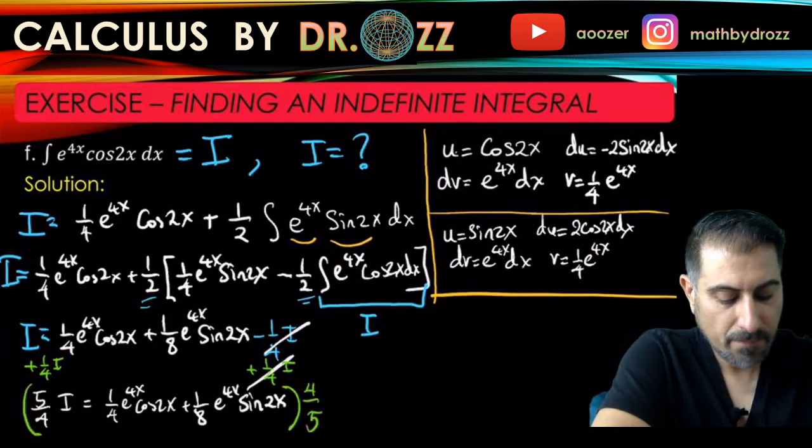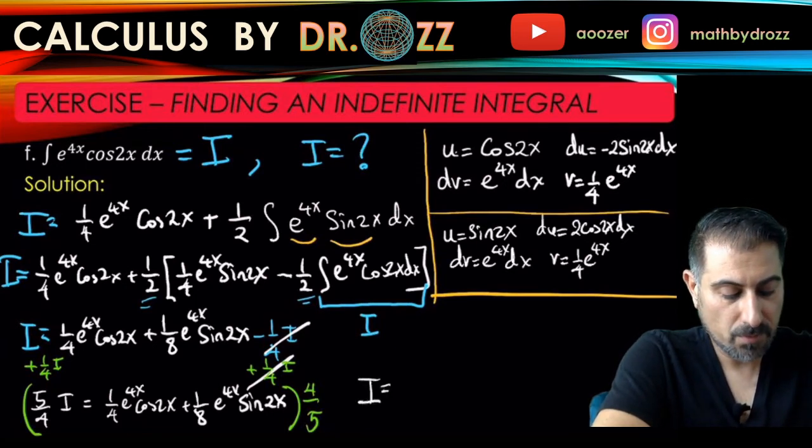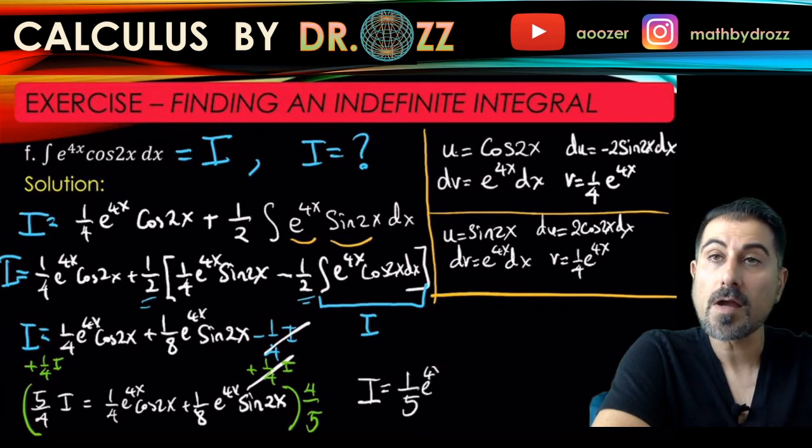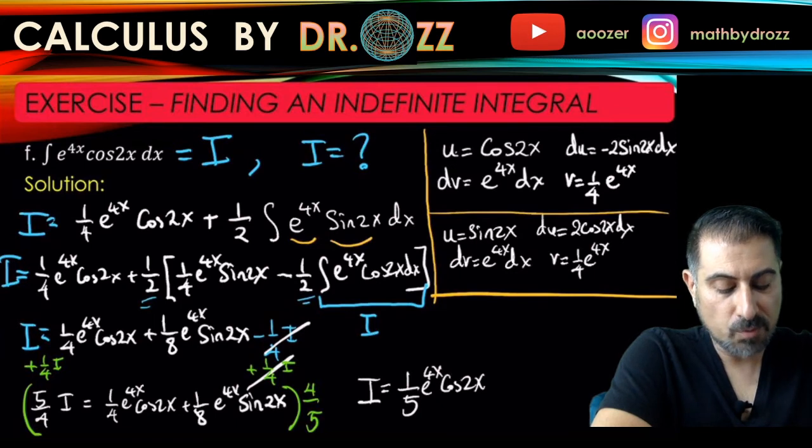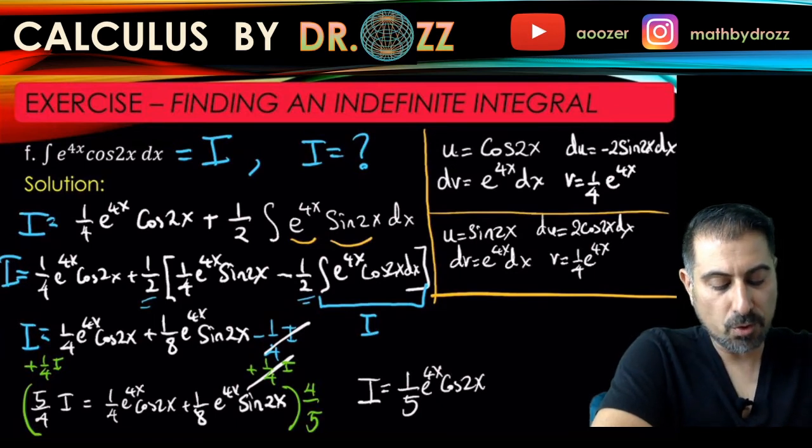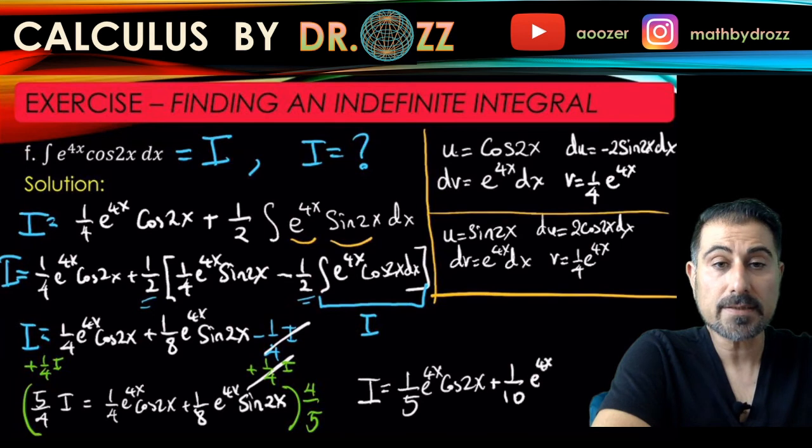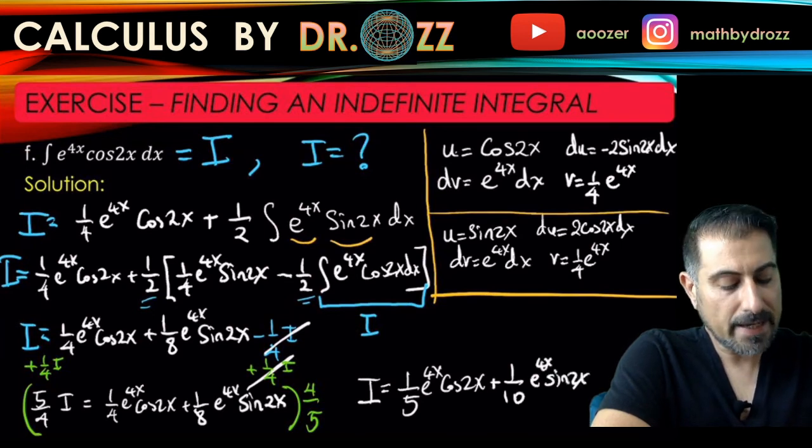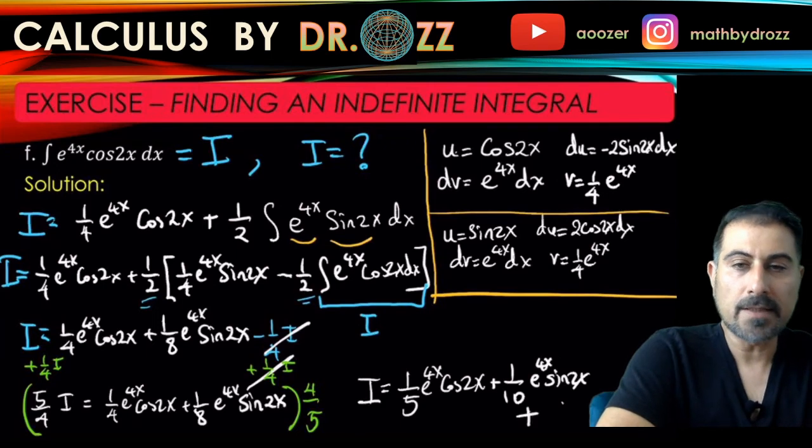And then four-fifths times one-eighth - that's four over forty, so it's one over ten - e to the 4x sine 2x. Now let me add a generic integrating constant here to finalize that.